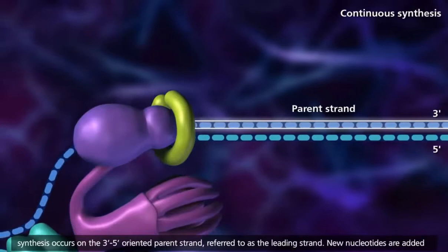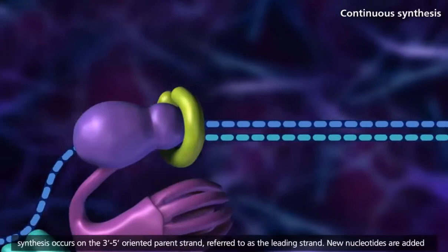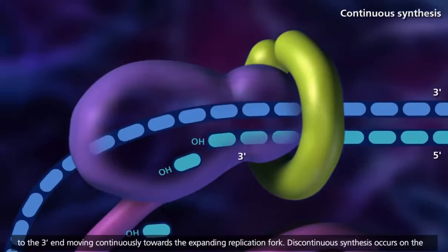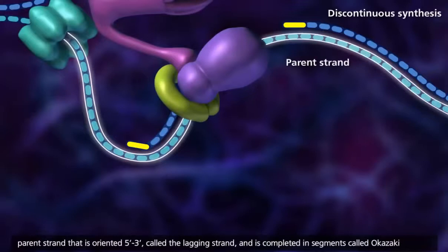New nucleotides are added to the 3' end, moving continuously toward the expanding replication fork. Discontinuous synthesis occurs on the parent strand that is oriented 5' to 3' called the lagging strand, and is completed in segments called Okazaki fragments.